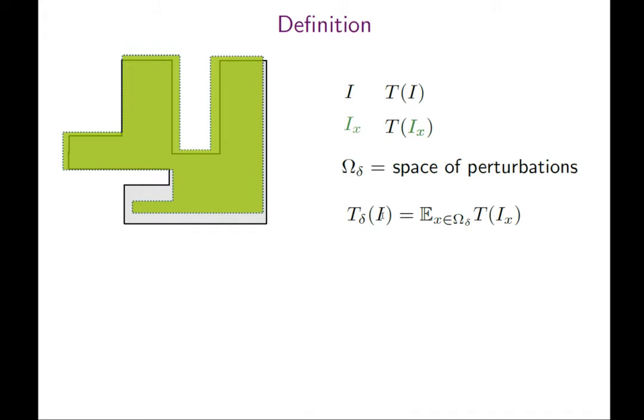This is how smoothed analysis for one instance is defined, and then we can define the smoothed analysis of all instances of a certain size. We would take the worst instance and take for that instance a perturbation of magnitude delta. The max symbolizes that we have some structure—maybe the worst instance is structured but still there may be a small amount of randomness—and then we take the expected running time.